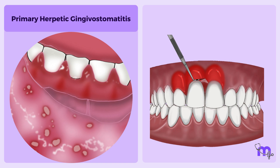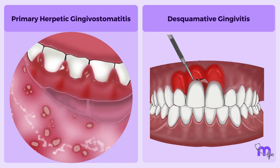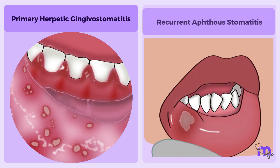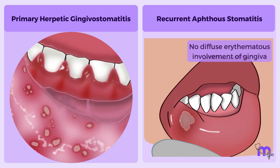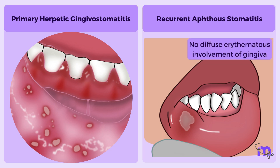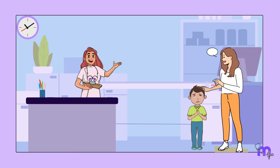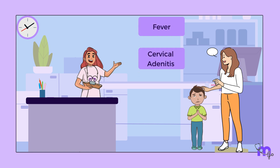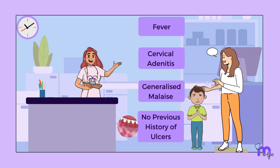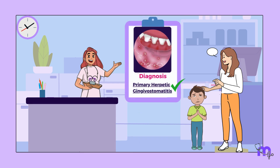I could also eliminate desquamative gingivitis as there was no peeling of the epithelial surface. In recurrent aphthous stomatitis, diffuse erythematous involvement of gingiva and acute toxic symptoms are absent, and as the name suggests, painful mouth ulcers usually recur. Ajo, on the other hand, reported fever, cervical adenitis, and generalized malaise without a previous history of the characteristic ulcers.